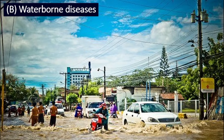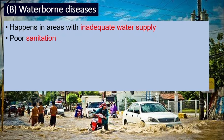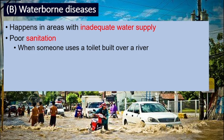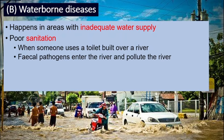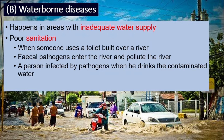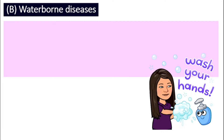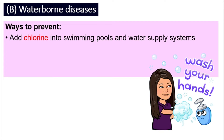Secondly, waterborne diseases. This happens in areas with inadequate water supply and also poor sanitation. For example, when a toilet is built over a river, the fecal pathogens will enter the river and pollute the water. If someone uses that polluted water — drinks it or uses it — they can get infected. Waterborne diseases can also spread through floods. To prevent this, we add chlorine into swimming pools and the water supply system to kill bacteria.